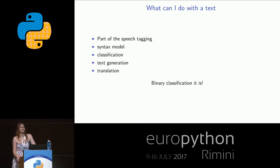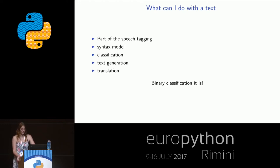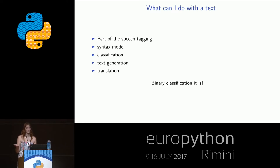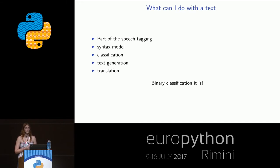We decided to go with classification. Profession class or industry are incredibly hard to classify because there is no canonical way to define those categories and they differ from country to country. Our marketing department suggested we do binary classification for jobs that require education and those that do not. For instance, a babysitter does not normally require any education, whereas a developer or architect does. It seems easy at first, but it's not.